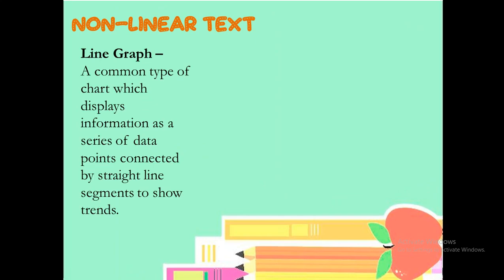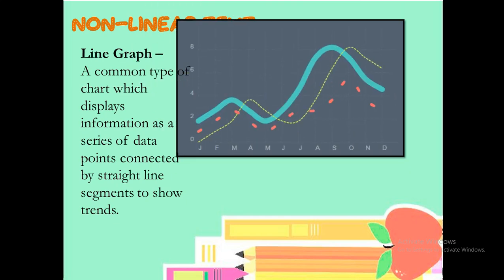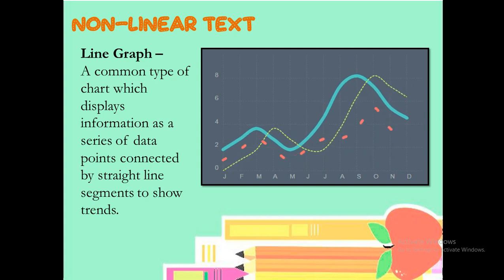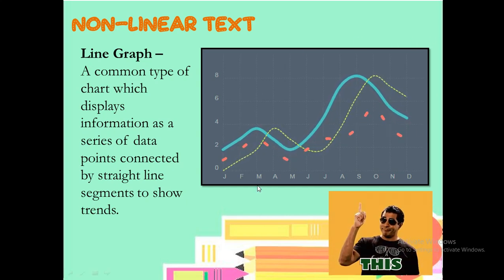For the continuation, non-linear texts also subdivided into different types. The first one would be the line graphs. Line graph, a common type of chart which displays information as a series of data points connected by straight line segments to show trends. In this module, aside from this video, you will be identifying certain information or specific data by means of browsing or analyzing the graph or the chart wherein you can pinpoint your specific data answering the specific or particular question below the graph. This would be an example of line graph. This would be a bit creative because I used GIF to augment the visual aesthetic.